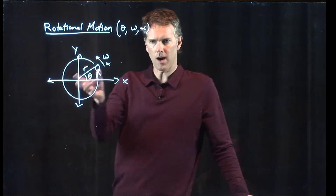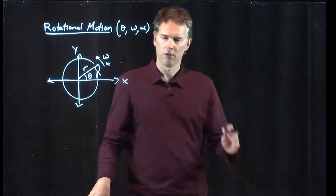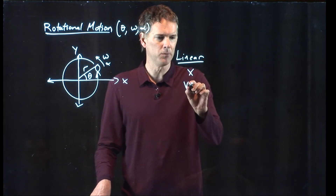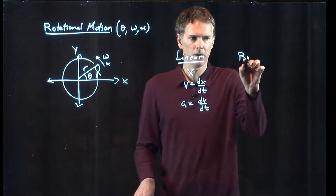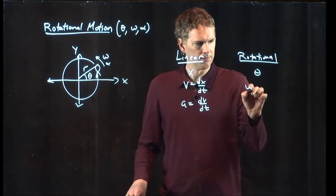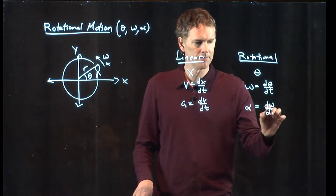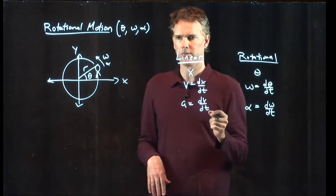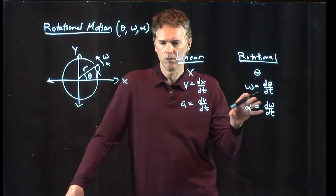The equations that describe rotational motion are nearly identical to the ones that describe linear motion — we're just changing the variables. For linear motion we had x, v (where v = dx/dt), and a (where a = dv/dt). In rotational motion we do the same thing with different variables: instead of x we use theta, omega is d-theta/dt, and alpha is d-omega/dt. Omega is the angular speed, alpha is the angular acceleration, and theta is the angle — typically in radians.